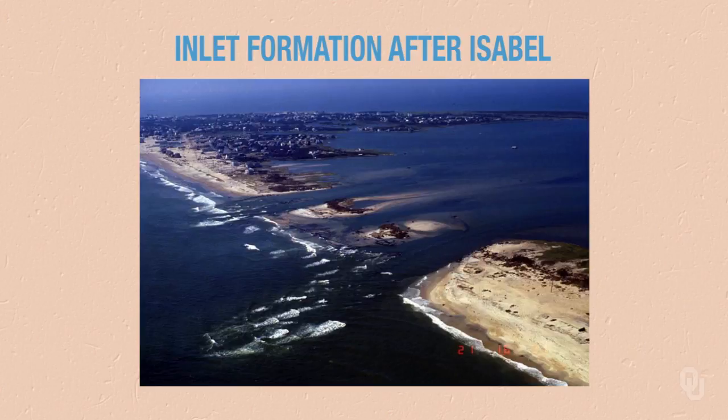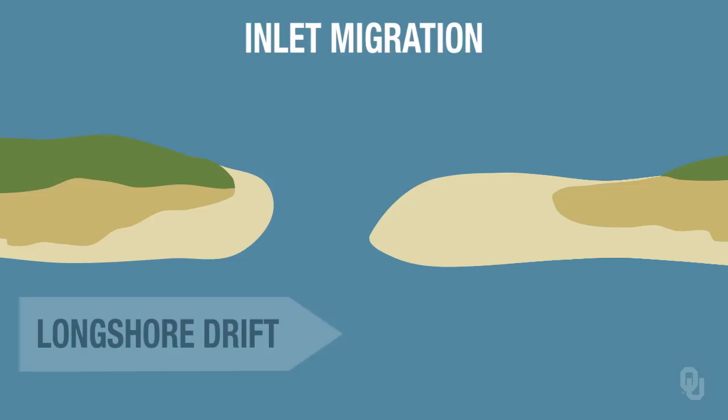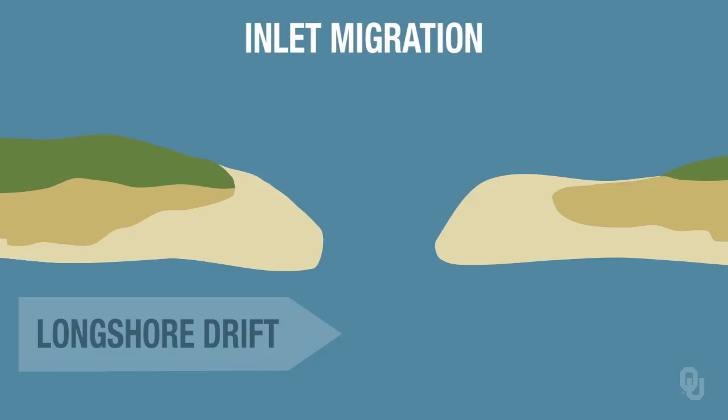Here's a picture of an inlet that formed after Isabel, a large storm on the North Carolina coast. Inlets also migrate, and they migrate because of longshore drift. As you can see in this diagram, the longshore drift is in one direction and it adds sediment to one end of the inlet. The tides still need to come in and out, so they want to maintain the size of that inlet. They erode on the downstream side of the inlet, so the inlet actually migrates because of the longshore drift.